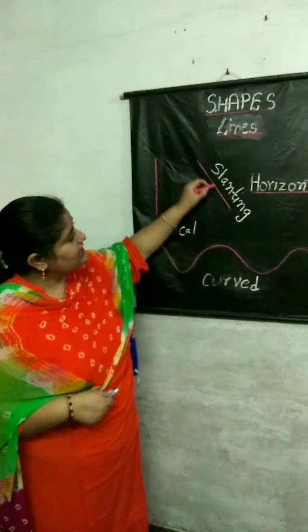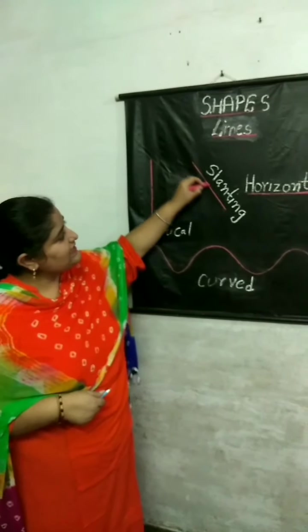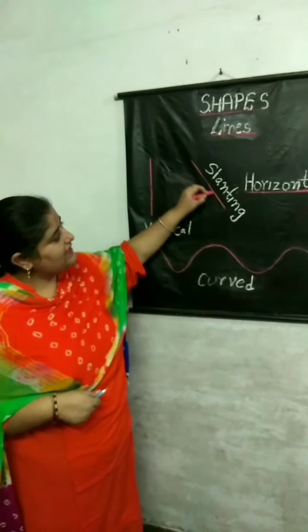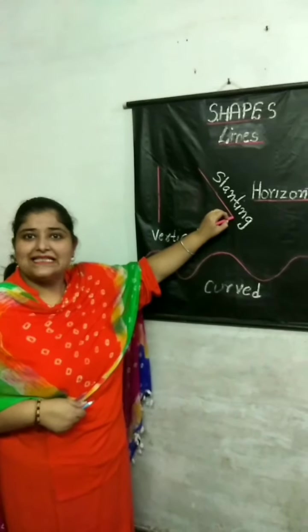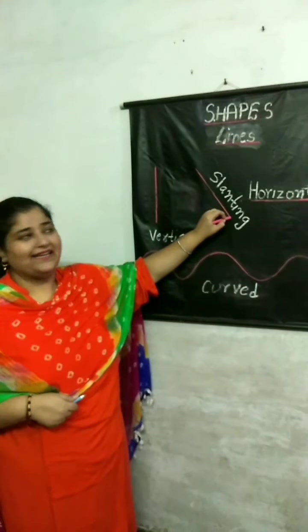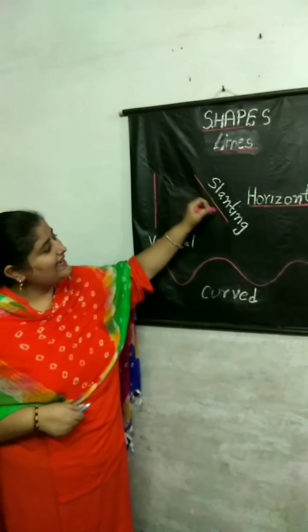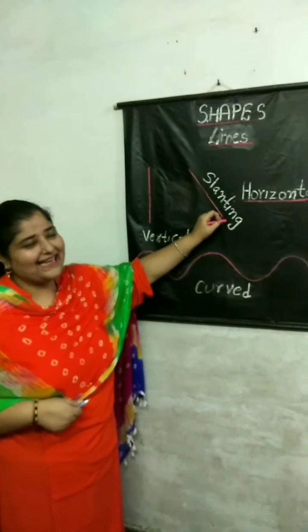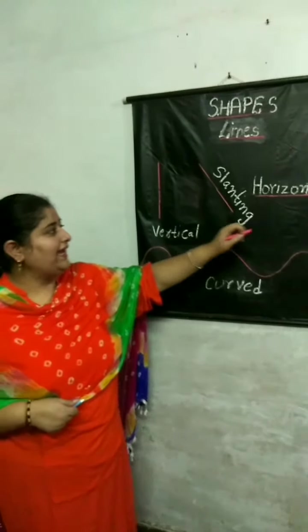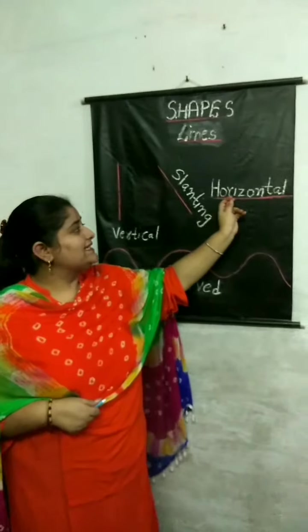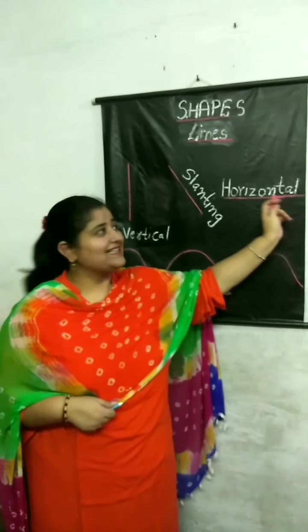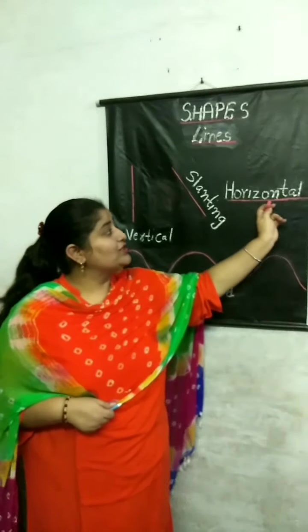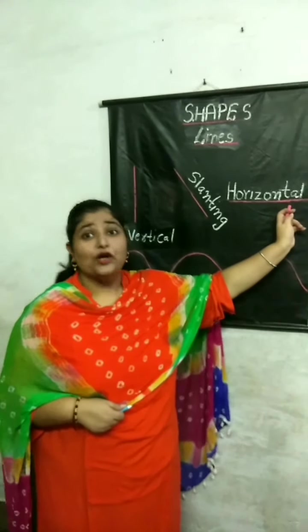Now, my dear students, you could see a tilted line — that is a slanting line. And this is a horizontal line.